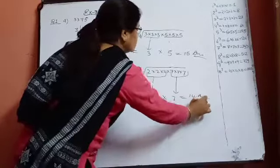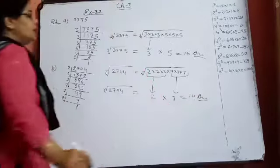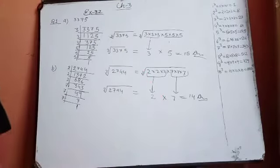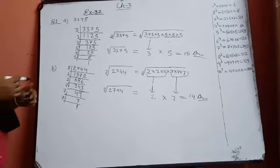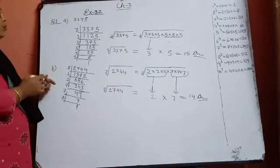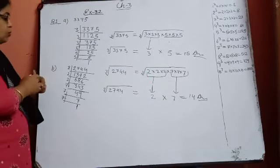First, divide by 3. 3 goes into the number: 3 times 1 is 3, 3 times 2 is 6, 3 times 5 is 15. Again divide by 3.